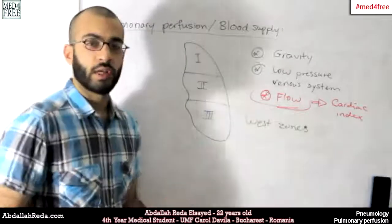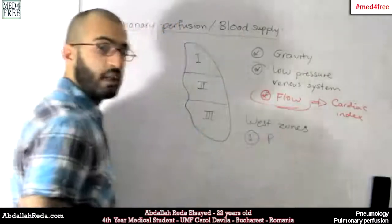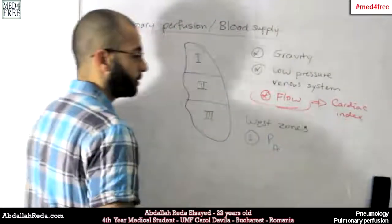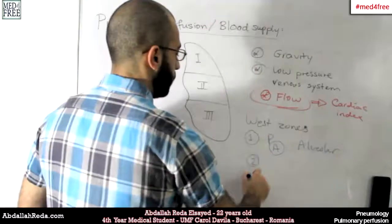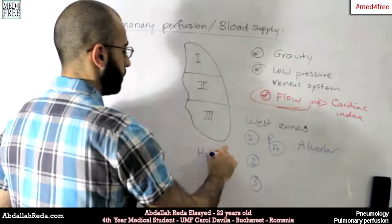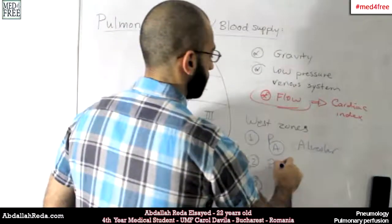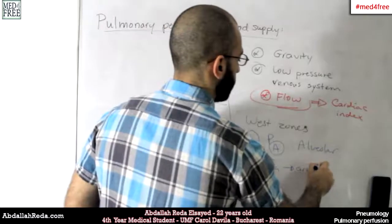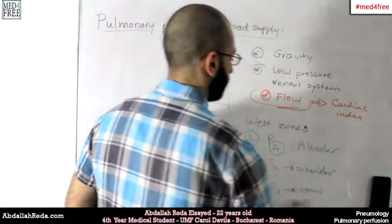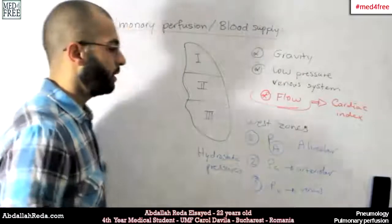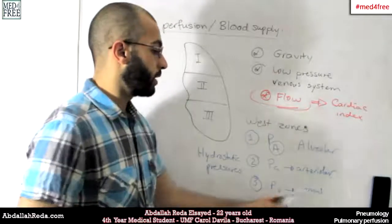Now there are three pressures we have to consider. The first is alveolar pressure, denoted with a capital A. The other two are hydrostatic pressures: the arteriolar pressure — the pressure in the arterioles, not the arteries, because we're talking at the alveolar level — and the venous pressure.